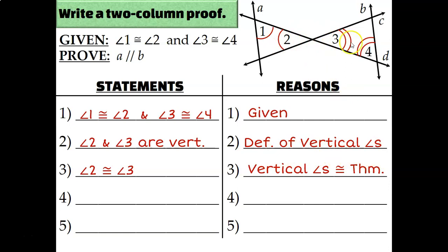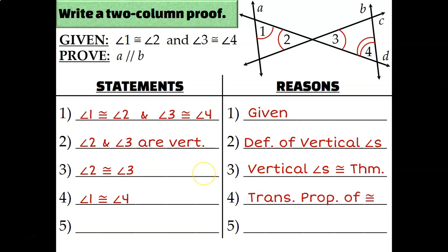That actually shows that the separate arc markings were misleading — angle 2 and angle 3 are the same measurement. This means angles 1, 2, 3, and 4 are all congruent. Specifically, angle 1 is congruent to angle 4 by the transitive property: since angle 1 is congruent to 2, 2 is congruent to 3, and 3 is congruent to 4, we can eliminate the middlemen and say that angle 1 is congruent to angle 4. Now I have alternate interior angles that are congruent, so line A is parallel to line B because of the alternate interior angles converse.